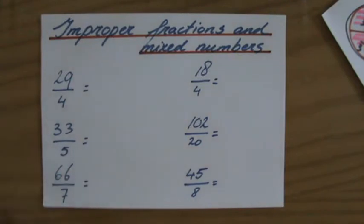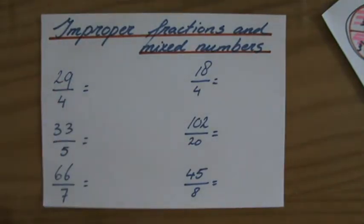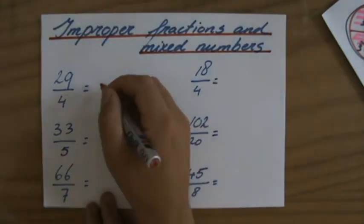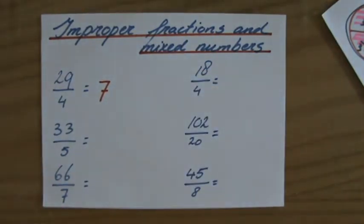Now, 29 over 4 is nothing more than 29 divided by 4. You ask yourself, how many times does 4 fit into 29? That's why it is so important that you know your timetables. You know that it fits in 7 times.